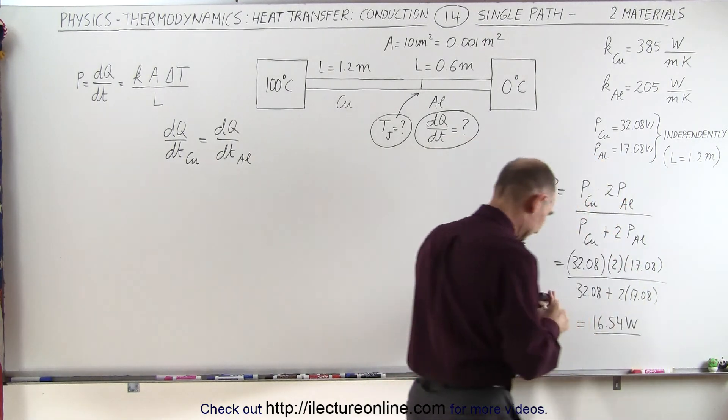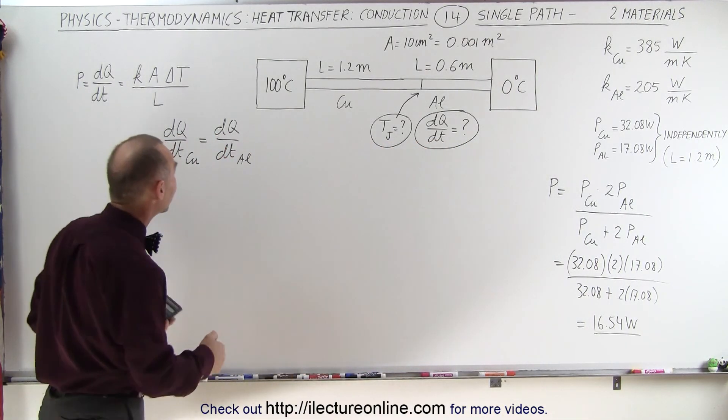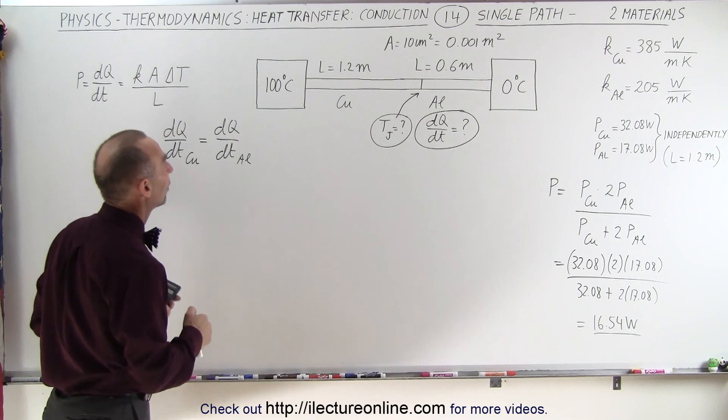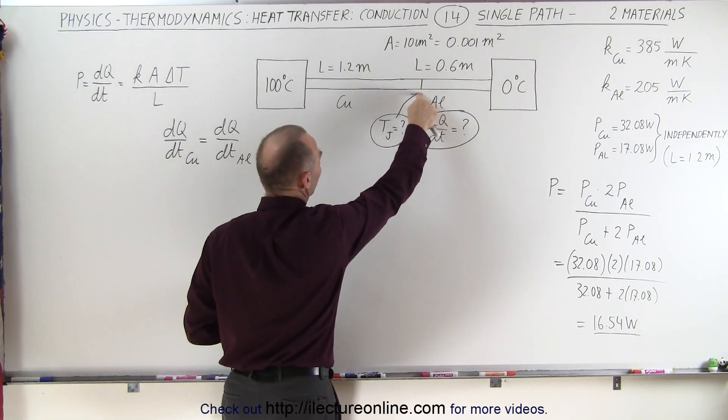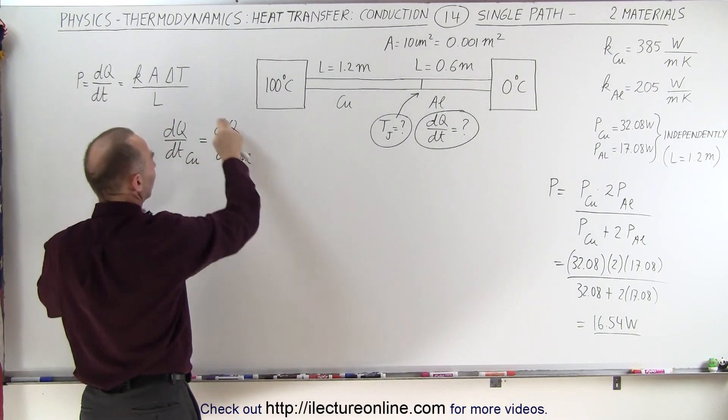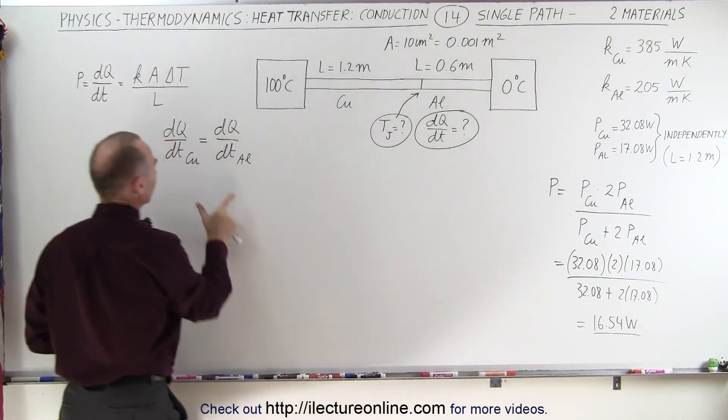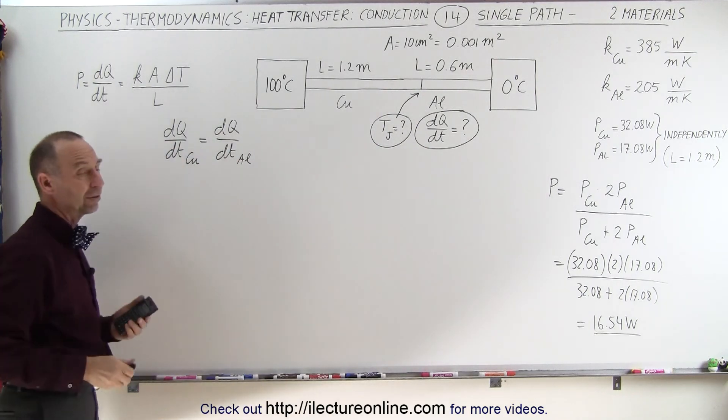So that's the heat conducted in this particular situation. Now again, we're going to calculate it using the traditional method. We're going to calculate the junction temperature between the two sections of copper and aluminum. And again, we realize that the heat transfer to the copper section must equal the heat transfer to the aluminum section.